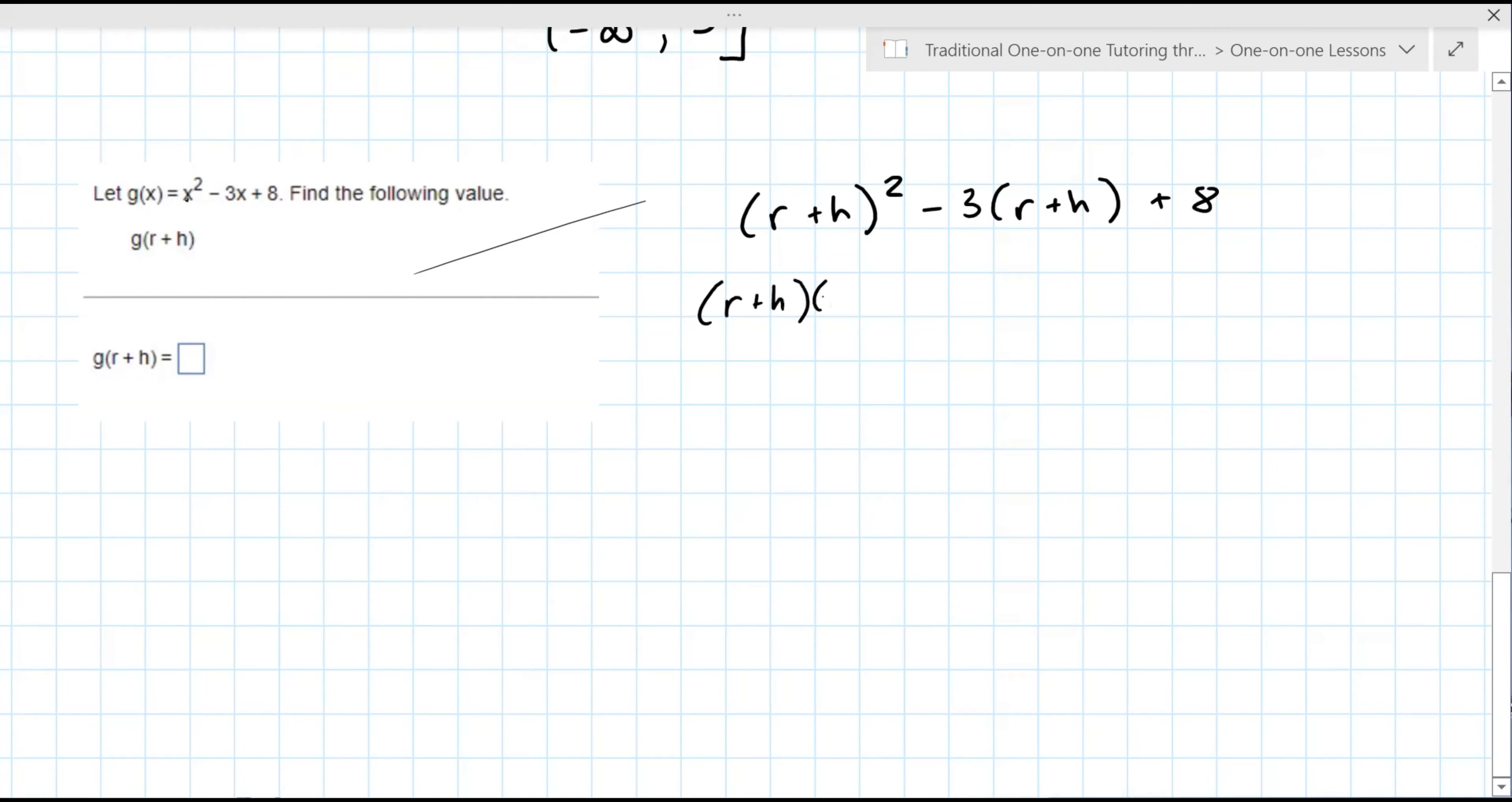So the R plus H squared is really R plus H times R plus H. And then you're going to foil that. So you're doing your first, your outer, your inner, and your last. R squared plus RH plus RH plus H squared. You have to distribute this minus three to both. Minus three R minus three H plus eight. And then from here you can combine like terms. So you've got R squared plus two RH plus H squared minus three R minus three H plus eight. And that's what it's looking for in this box here.